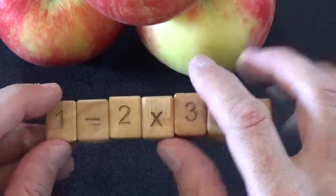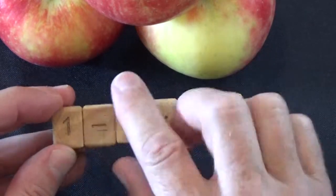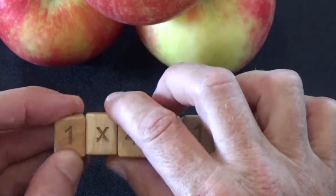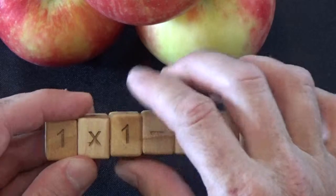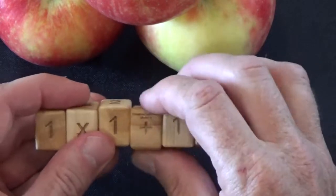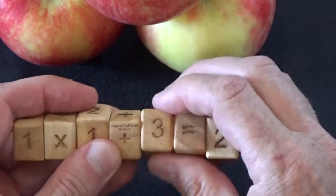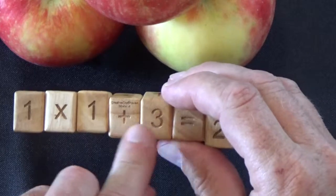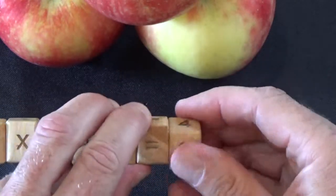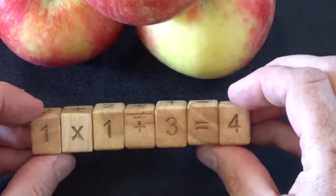One, on any of the faces it doesn't matter, you make the equation 1 times 1 is 1 plus 3. So 1 times 1 is 1 plus 3 is 4. That is a correct equation.